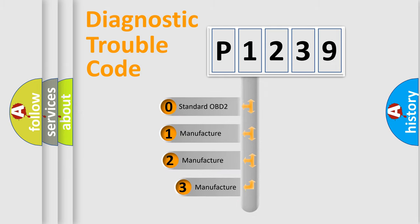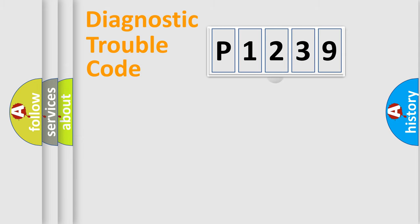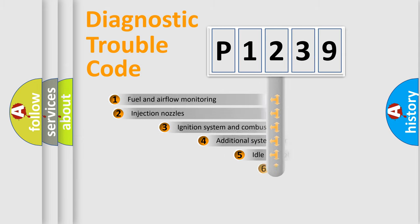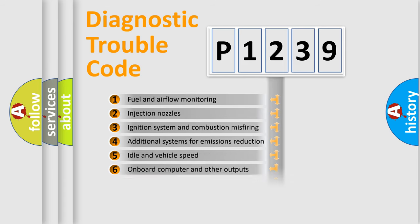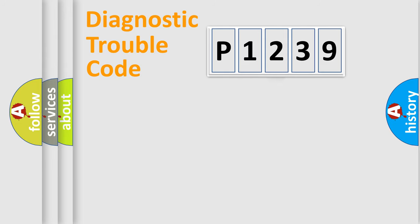If the second character is expressed as zero, it is a standardized error. In the case of numbers 1, 2, or 3, it is a more precise expression of the car-specific error. The third character specifies a subset of errors. The distribution shown is valid only for the standardized DTC code.